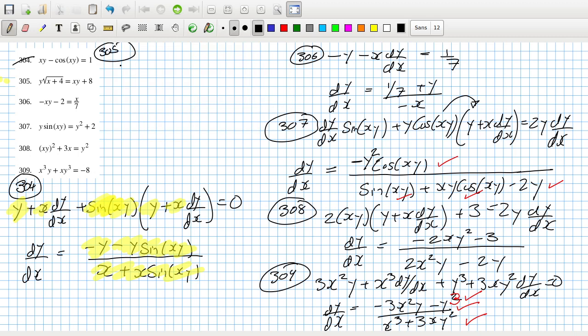305. So that would be dy/dx root(x plus 4) plus y, and then bring down the power, reduce the power by 1, multiply by the inside derivative, and that's y plus x dy/dx.